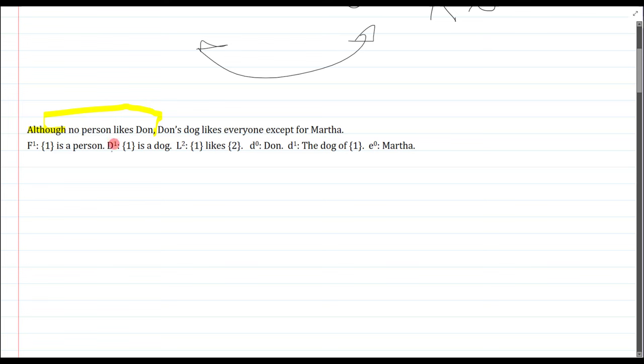No person likes Don, that's pretty straightforward. Don is an operation, sorry, the name letter D to the zero. So how do I say no person? Well you can say it in one of two ways. It's not the case that there is something that is a person and likes Don. So we'll say likes X likes D. You could have also said for anything if it's a person then it's not the case that they liked Don. These are equivalent.